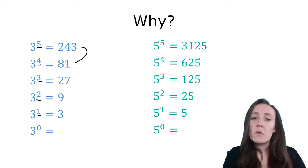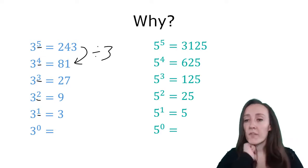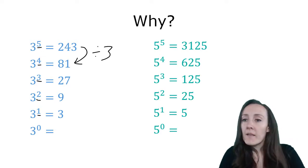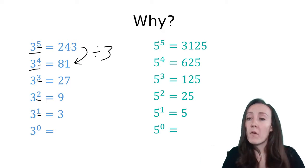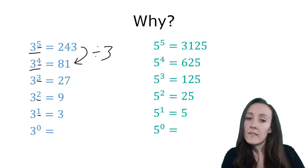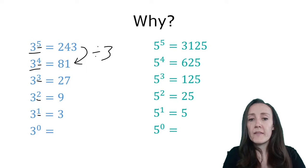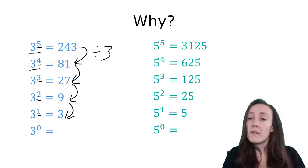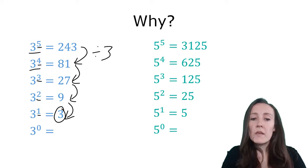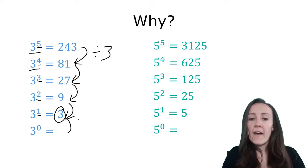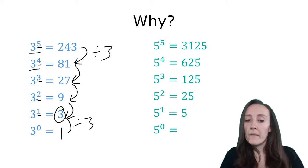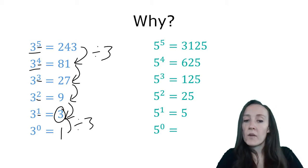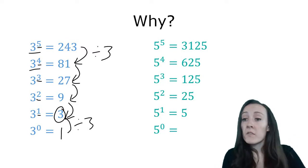If you do 243 and you divide it by 3, the result is 81, and that makes sense because 3 to the fifth power is 3 times itself 5 times, whereas 3 to the fourth power is only multiplied 4 times. So it makes sense that dividing by 3 would give you the next number, and this pattern holds consistent as you go down throughout all of the numbers — any number divided by 3 is going to equal the next number down. And if you take the number 3, which is 3 to the first power, and you divide that by 3, you're going to get the answer 1, and that's the reason that 3 to the zero power equals 1. This pattern will hold true regardless of what number you chose.